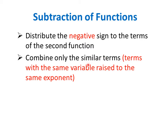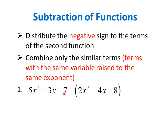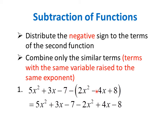Take note that the similar terms are the terms with the same variable raised to the same exponents. Let's consider some examples. First, let's say we have to get the difference of 5x squared plus 3x minus 7 and the function 2x squared minus 4x plus 8. So first we have to distribute this negative sign to each term of the second function. We can copy the first three terms: 5x squared plus 3x minus 7. If we distribute this negative sign, the signs of the terms will be reversed. Negative 1 times 2x squared is minus 2x squared. Negative times negative 4x is positive 4x. Negative times positive 8 is negative 8.